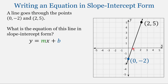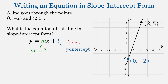But back to today. Here we have the points (0, -2) and (2, 5). Notice one of the points has an x-coordinate of 0. That means it is on the y-axis, so this is our y-intercept. So b is equal to negative 2. But how about the slope m? We don't have that information yet, but we have all we need to find it.